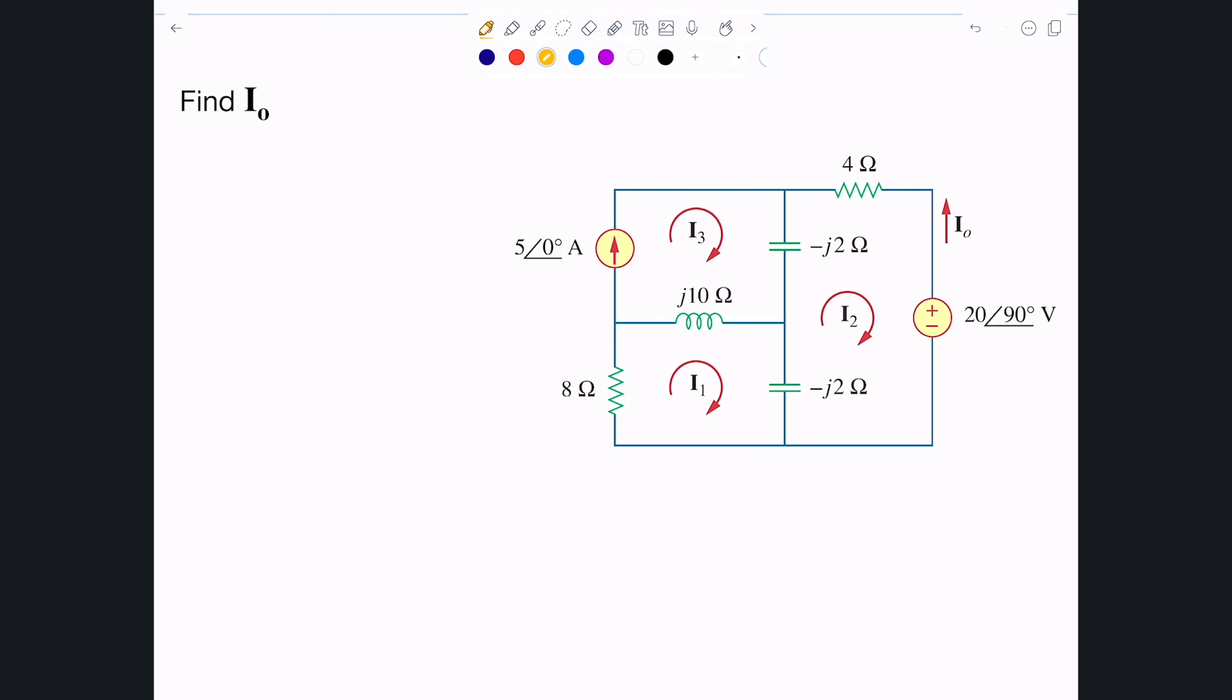Let me get started by writing the different mesh current equations. The first one will be the third mesh and I'm starting with it because I know the I3 is 5∠0° amps. From there I'll just substitute it by its value.